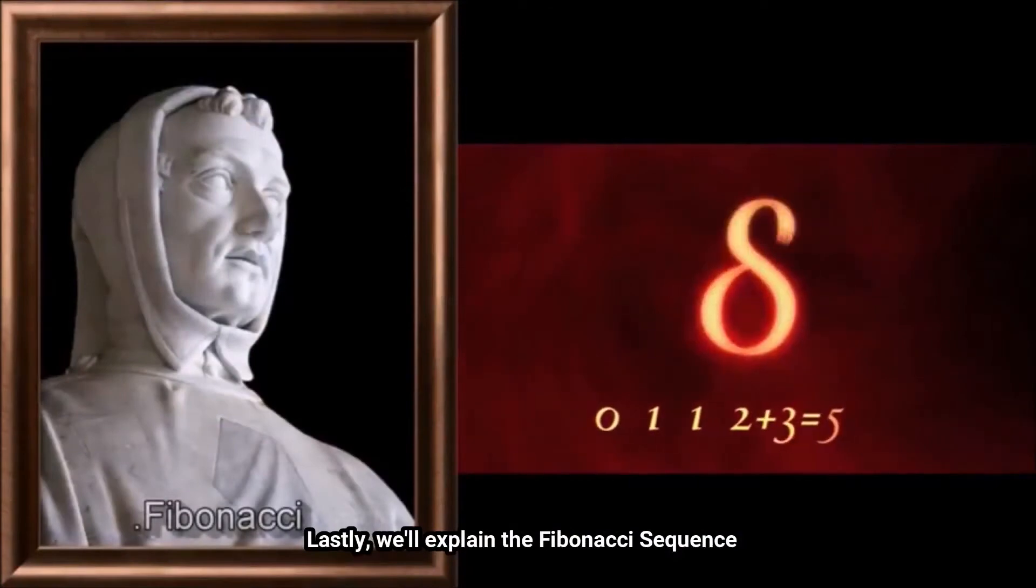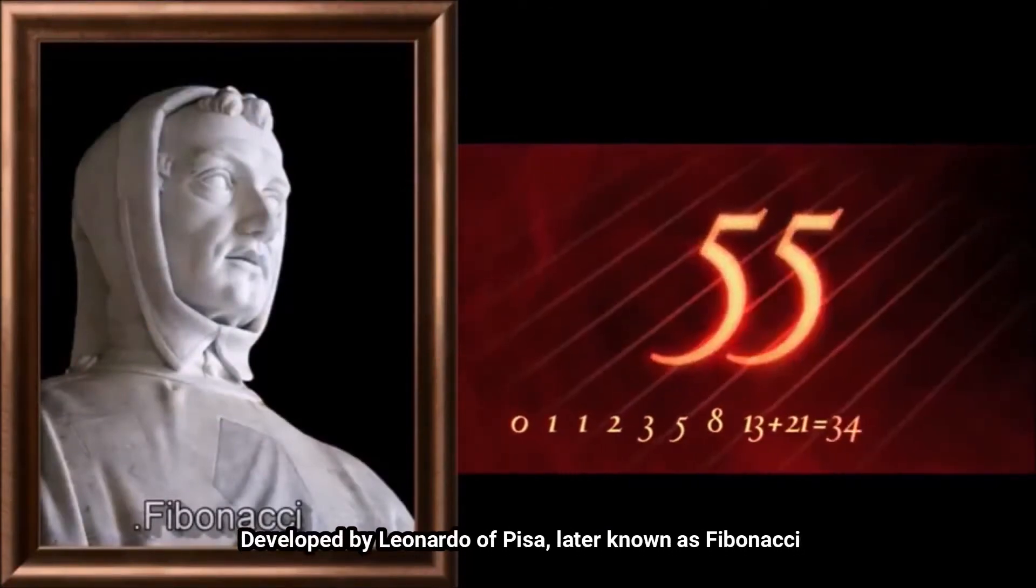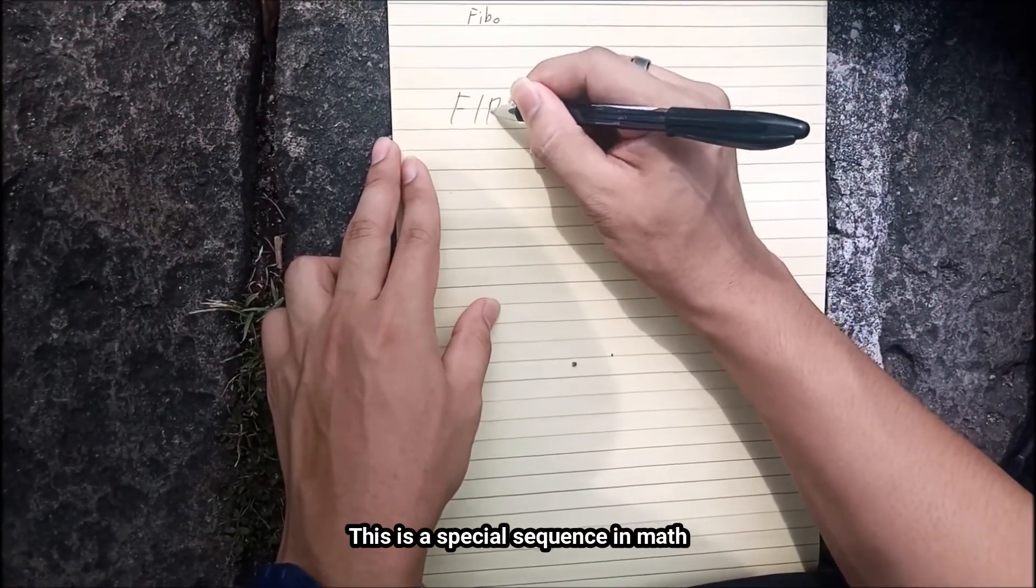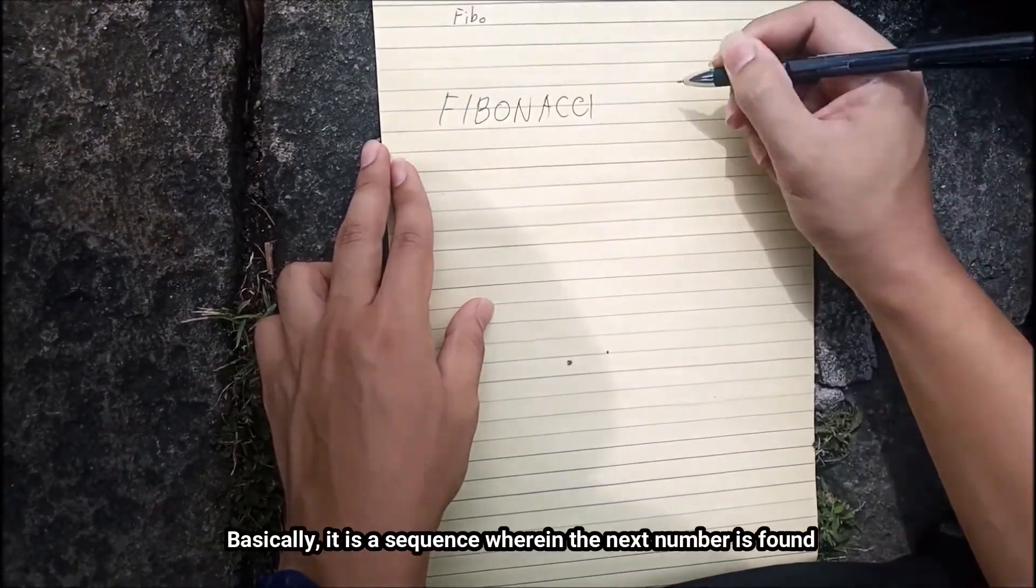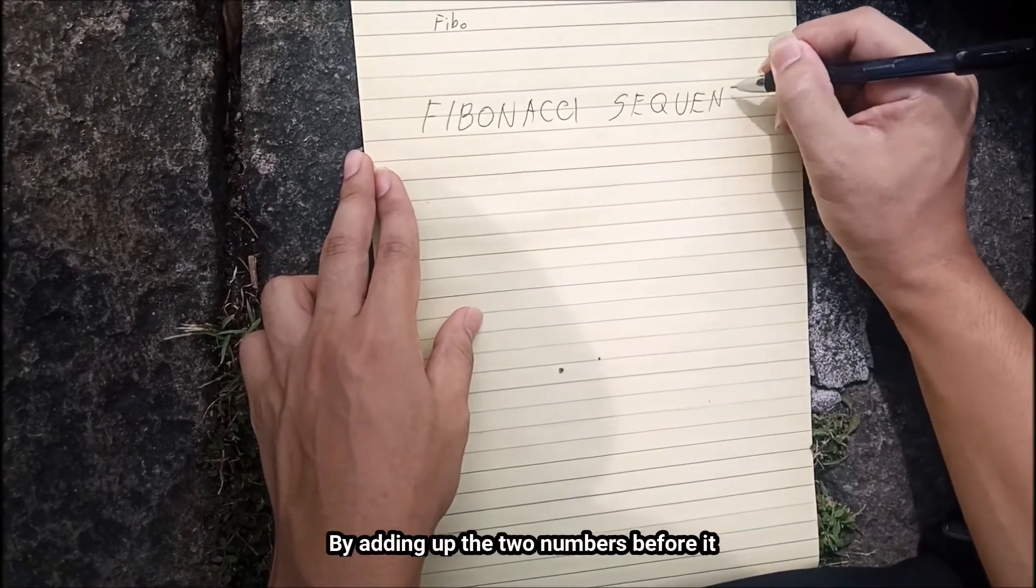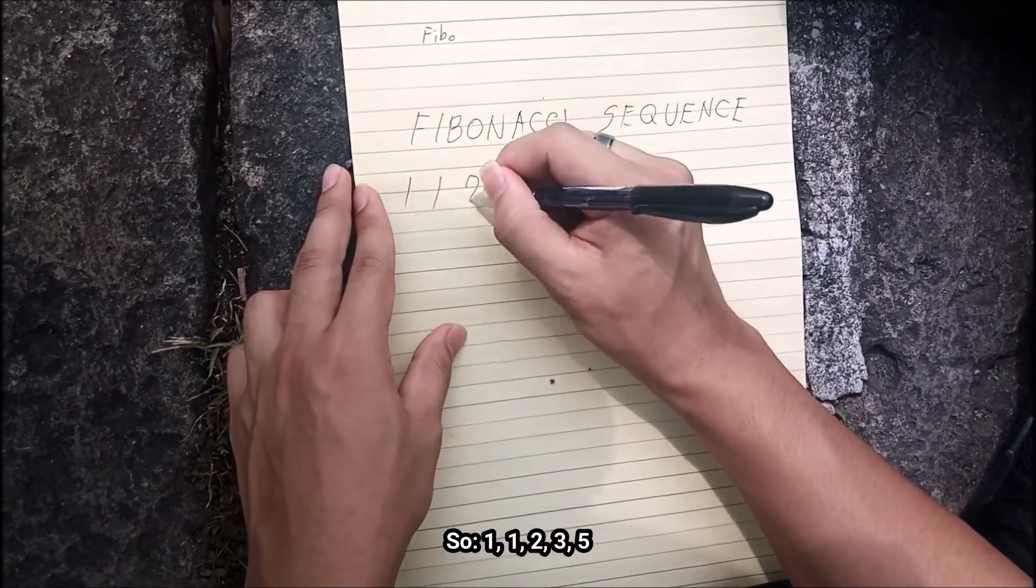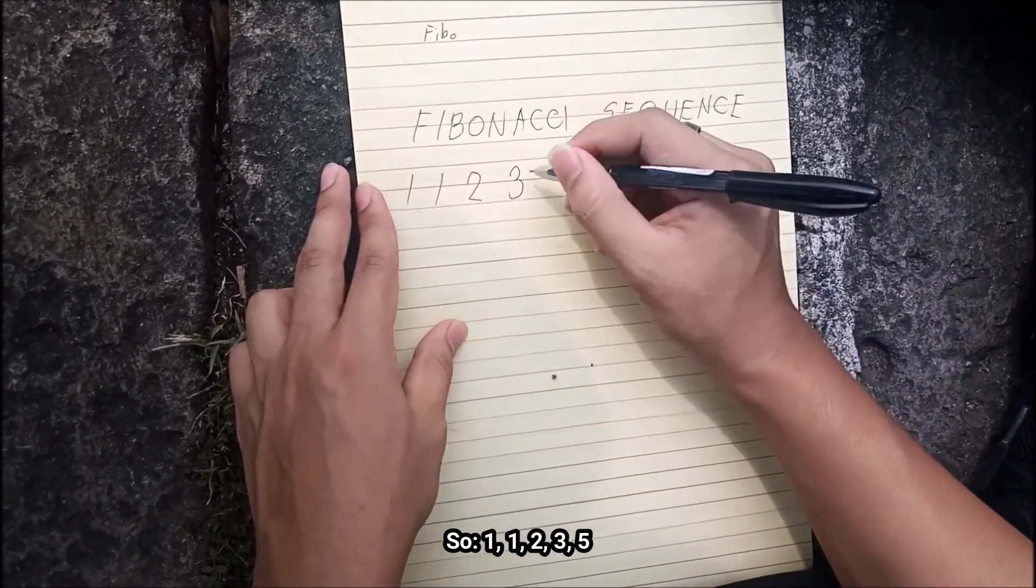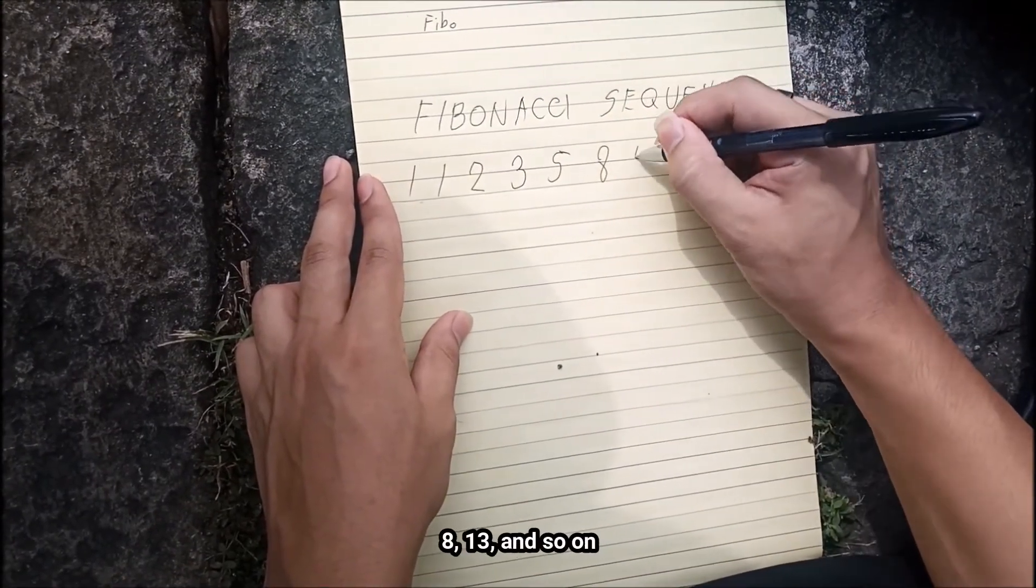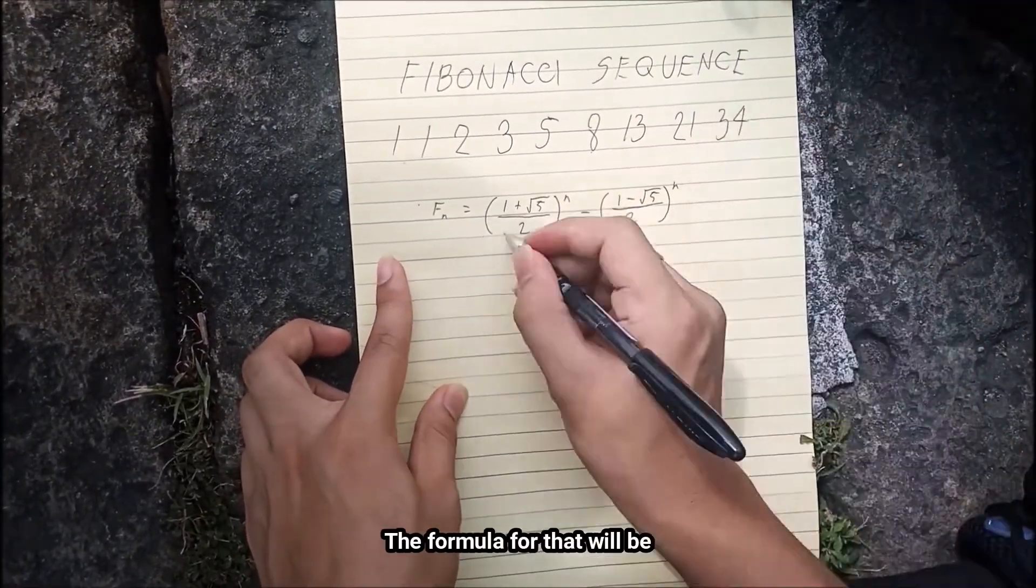Lastly, we'll explain the Fibonacci sequence, developed by Leonardo of Pisa, later known as Fibonacci. This is a special sequence in math. Basically, it is a sequence wherein the next number is found by adding up the two numbers before it. So, 1, 1, 2, 3, 5, 8, 13, and so on.